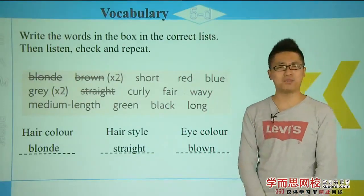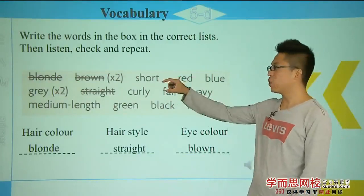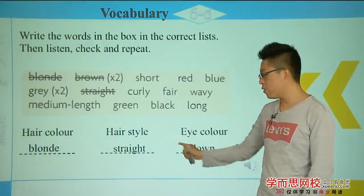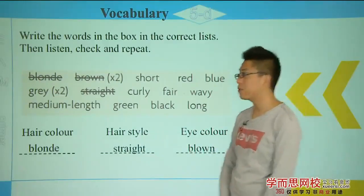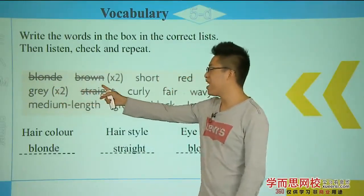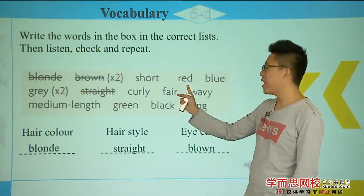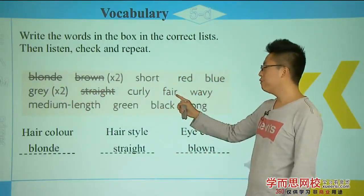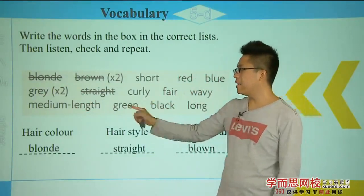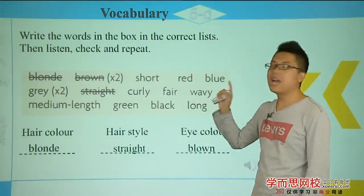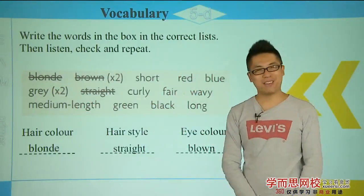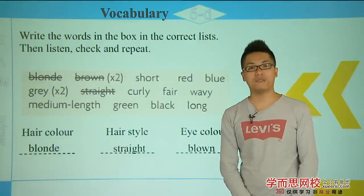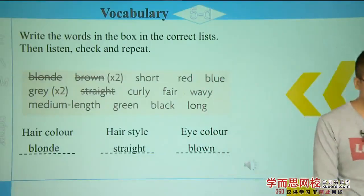Let me give you some time to work it out. Choose the words and put them into three categories: hair color, hairstyle, and eye color. Here are the words again — blonde, brown, short, red, blue, gray, straight, curly, fair, wavy, medium length, green, black, and long. I'll give you one minute — but here, ten seconds. Come on, think about it!